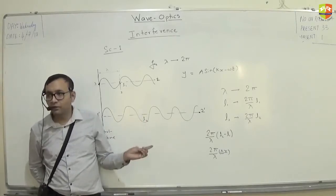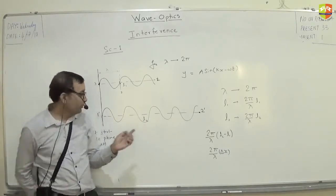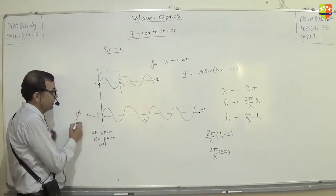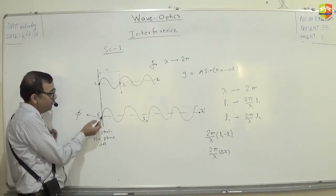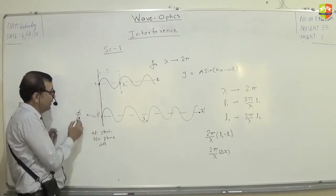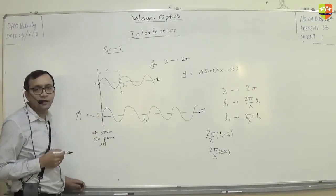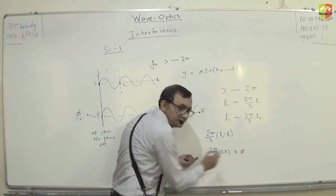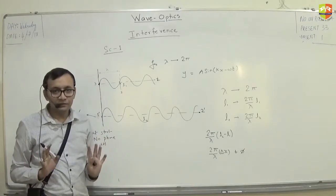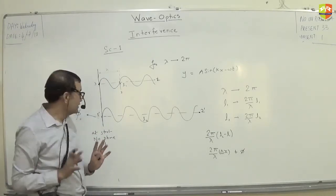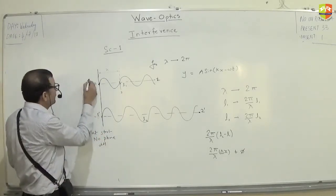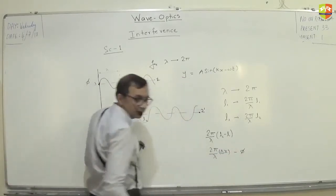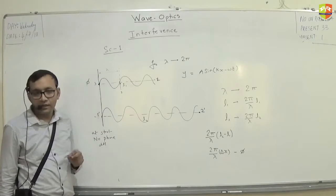Suppose initially there is a phase difference of φ — as in, 1-dash is ahead of 1 by φ. Then total phase difference will be this plus φ. If this one is ahead by φ, then the total phase difference will be this minus φ.